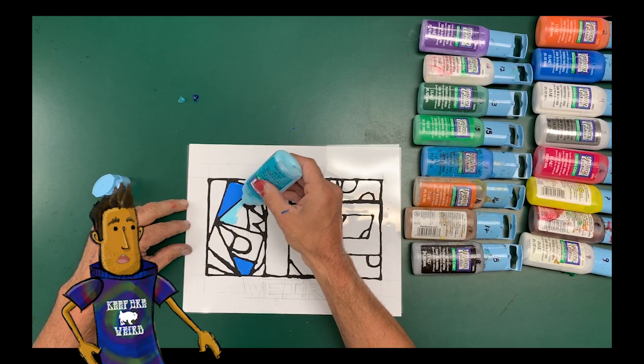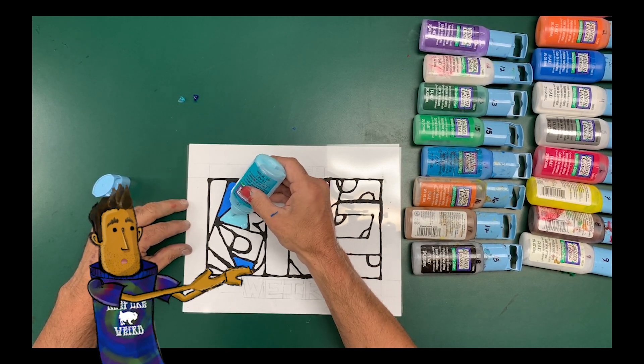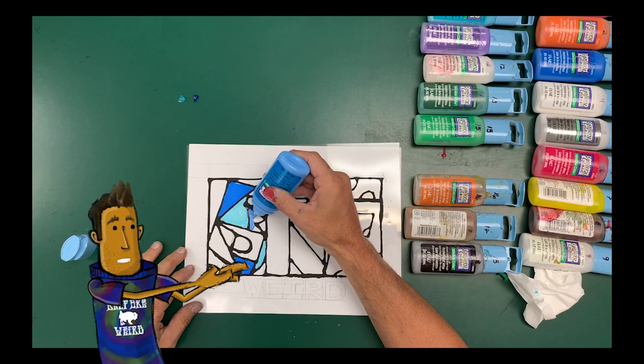And so you're going to use this glass paint to paint into the sections that you created in your drawing. And it's nice, because the black glue kind of makes like a little pool, and it kind of keeps your paint colors in, which is nice.